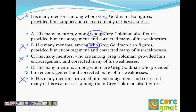So now we have A and D. His many mentors, among whom are Greg Goldman, who provided him and corrected many of his weaknesses. Greg Goldman is singular, but 'are' is plural. So that's where it goes — this also goes. So the choice is A. It's absolutely fine. His many mentors, among whom Greg Goldman also figures, provided him support and corrected many of his weaknesses. It's absolutely fine. We don't have to unnecessarily locate errors.